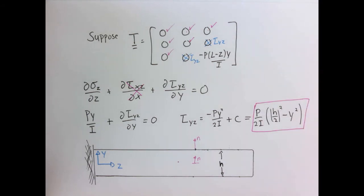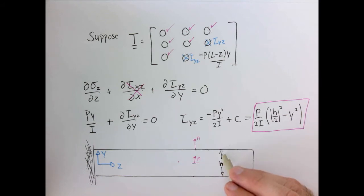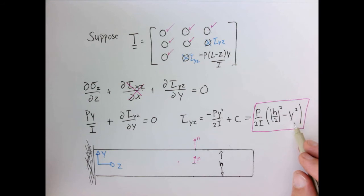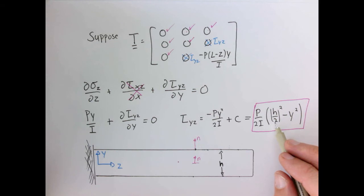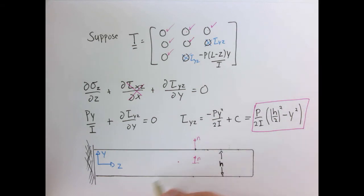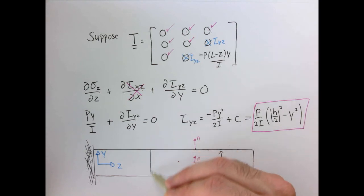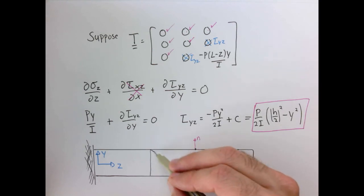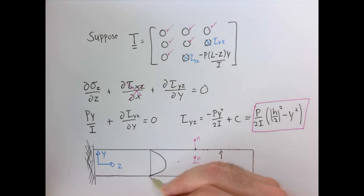Applying the boundary condition yields the final result for τ_yz = P(h²/4 − y²)/(2I). We can verify this works: at y = ±h/2 the shear stress goes to zero, and at y = 0 (the center) the shear stress is maximum. So the shear stress distribution is parabolic across the cross-section — a parabola shape with maximum at the center and zero at the top and bottom surfaces.